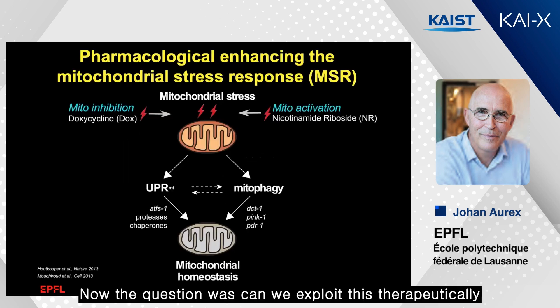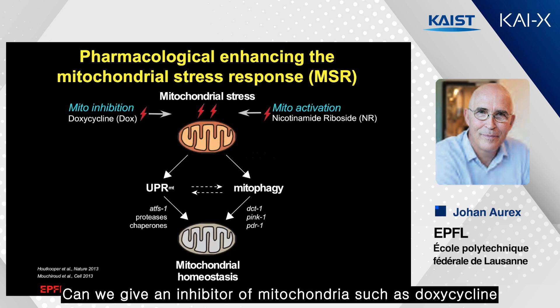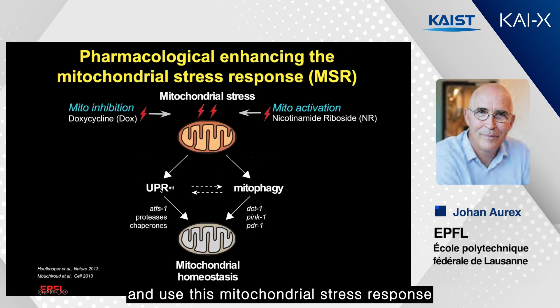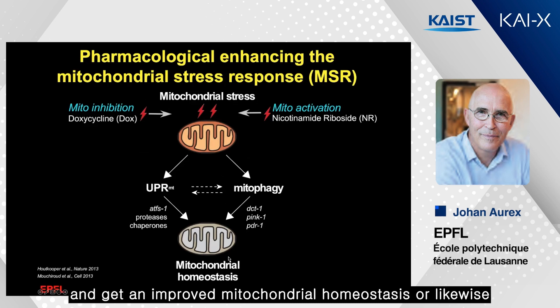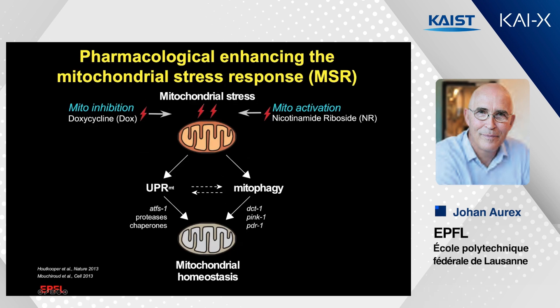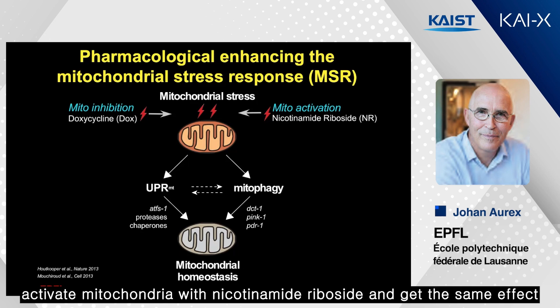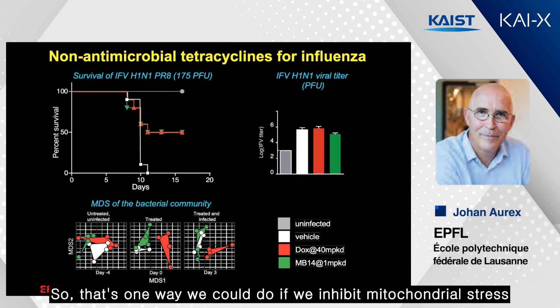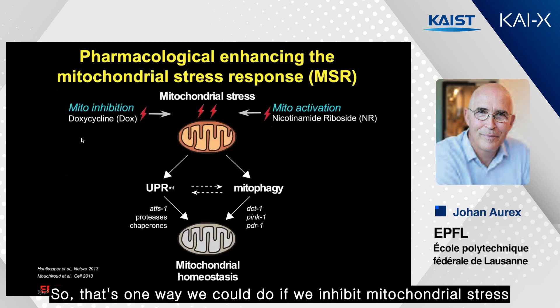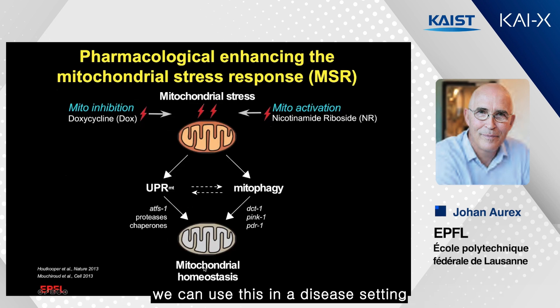The question was: can we exploit this therapeutically? Can we give an inhibitor of mitochondria, such as doxycycline, to induce this mitochondrial stress response and get improved mitochondrial homeostasis? Or likewise, activate mitochondria with nicotinamide riboside and get the same effect? By inducing mitochondrial stress, we can make more robust mitochondria and use this in a disease setting.